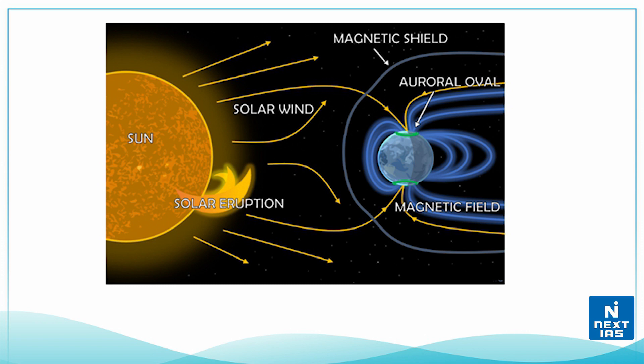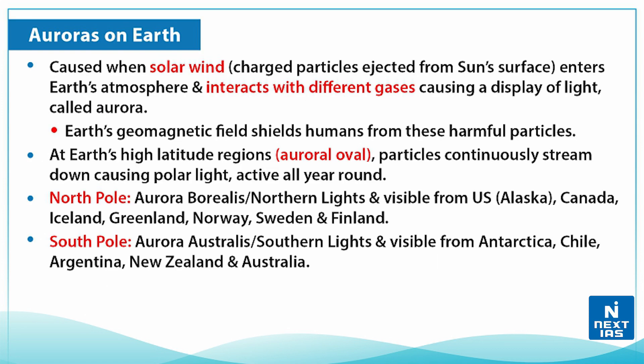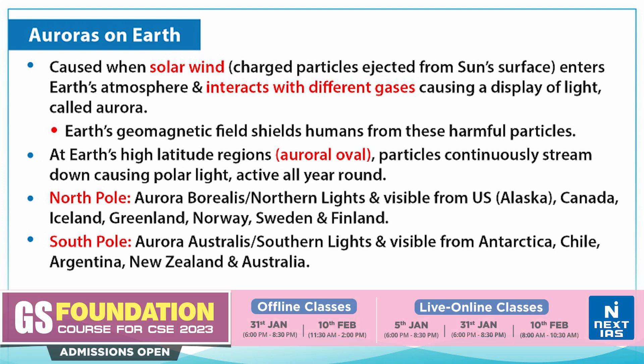This streaming causes polar lights, which are active all year round. You might have heard of the Aurora Borealis at the northern pole, which are the northern lights, visible from regions like Alaska in the US.